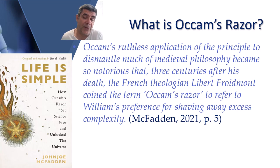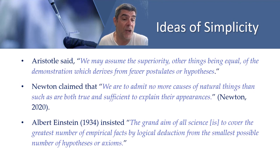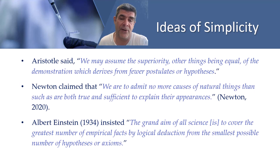Statements like these have been attributed to other thinkers, including Aristotle, Sir Isaac Newton, Sir Bertrand Russell, and Albert Einstein. Aristotle stated we may assume the superiority, other things being equal, of the demonstration which derives from fewer postulates or hypotheses. In his Principia, one of Newton's rules was: we are to admit no more causes of natural things than such as are both true and sufficient to explain their appearances. Newton put this into practice when he applied laws of moving bodies to all moving bodies anywhere in the universe. Albert Einstein, in 1934, insisted that the grand aim of all science is to cover the greatest number of empirical facts by logical deduction from the smallest possible number of hypotheses or axioms.